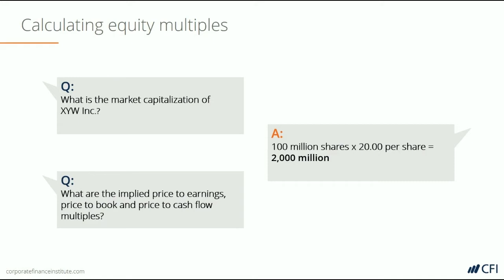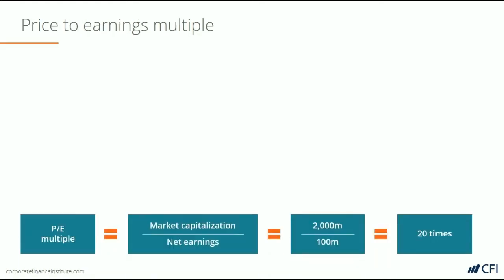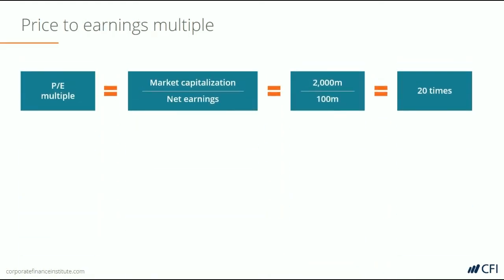We can calculate the P/E ratio, price to book, and price to cash flow to equity. Now let's calculate the P/E multiple. We're going to take the market capitalization and divide it by the total net earnings. The market cap is $2 billion, the net earnings is $100 million, so the P/E ratio is 20 times.